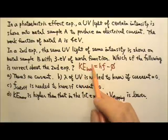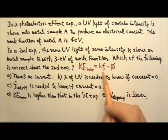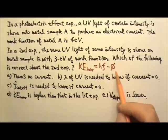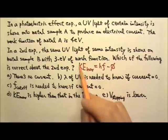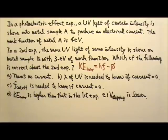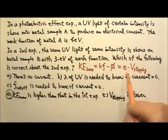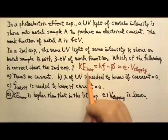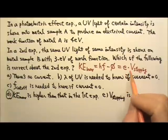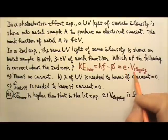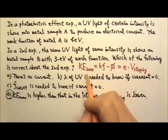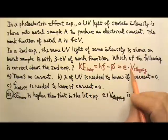Because the maximum kinetic energy equals the hf of the incident UV minus the work function, the lower the work function, the higher the maximum kinetic energy. So the answer is D. For E, the stopping voltage is used to measure the maximum kinetic energy, and maximum kinetic energy equals the electron charge times the stopping voltage. So when the work function decreases, the maximum kinetic energy increases and the stopping voltage also increases. So E is wrong.